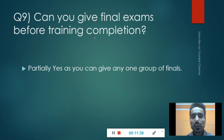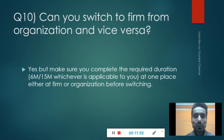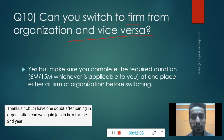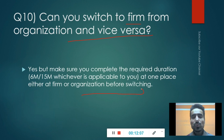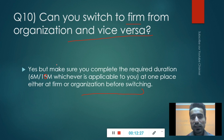Can you give final exams before training completion? Partially yes — you can give any group of the final exams if you haven't yet completed training. But for the last group, you have to complete your training. If you want to complete both groups, you definitely have to complete training. Can you switch from a firm to an organization or vice versa? Yes, but make sure you complete the required duration — 6 months or 15 months, whichever is applicable — at one place before switching.